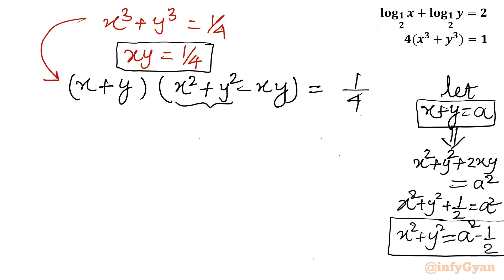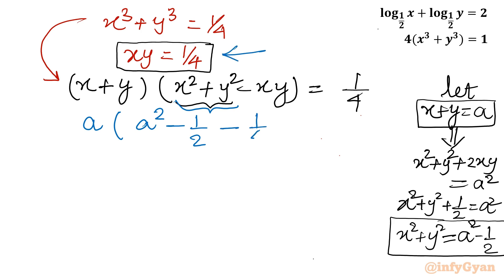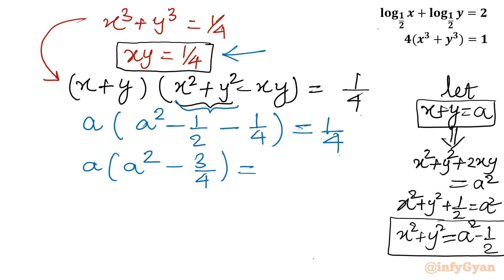Now substituting the values: x plus y is a, x square plus y square is a square minus one half, and xy is 1 by 4. So we get: a times (a square minus one half minus 1 by 4) equal to 1 by 4. Simplifying the bracket: negative one half minus 1 by 4 gives negative 3 by 4, so we have a times (a square minus 3 by 4) equal to 1 by 4.